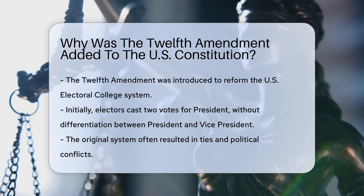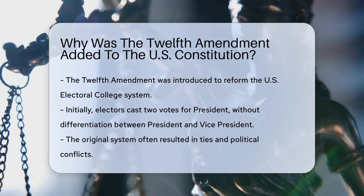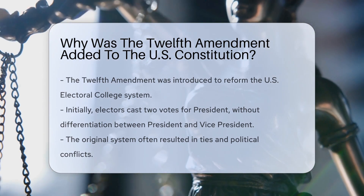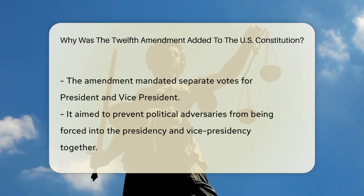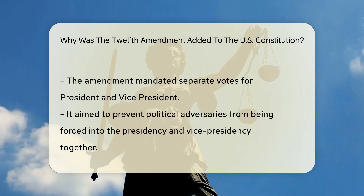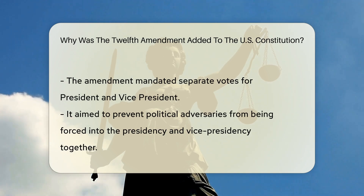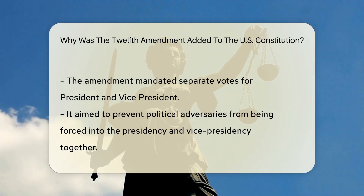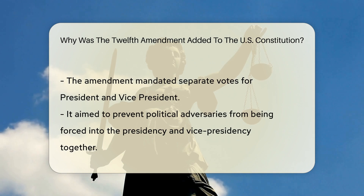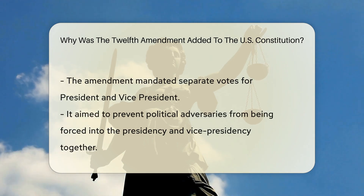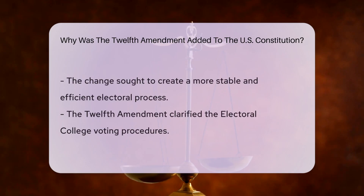Before the amendment, electors cast two votes for president, with the runner-up becoming vice president. This system led to problems like ties and political conflicts. The 12th Amendment changed the process to separate the votes for president and vice president.